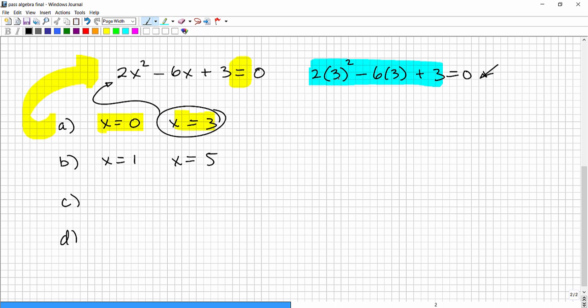So remember the order of operations, I gotta start here, so three squared, that's nine. So two times nine minus six times three is 18, plus three is equal to zero. So I have two times nine is 18. So I have 18 minus 18 plus three equals zero. So 18 minus 18 is zero. So this came out to be three is equal to zero, okay? So clearly, the left-hand side does not equal the right-hand side. That's an indication, or that's proof, that this is not the answer, okay?